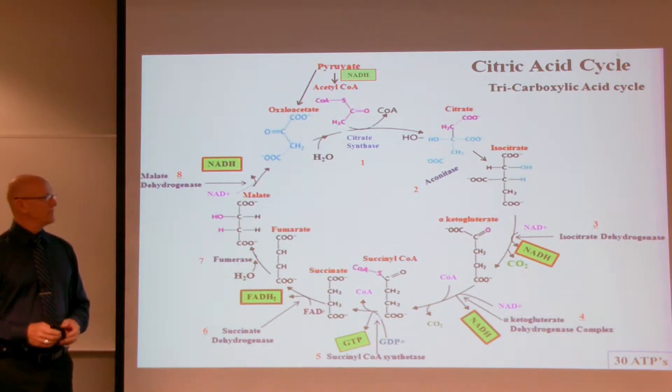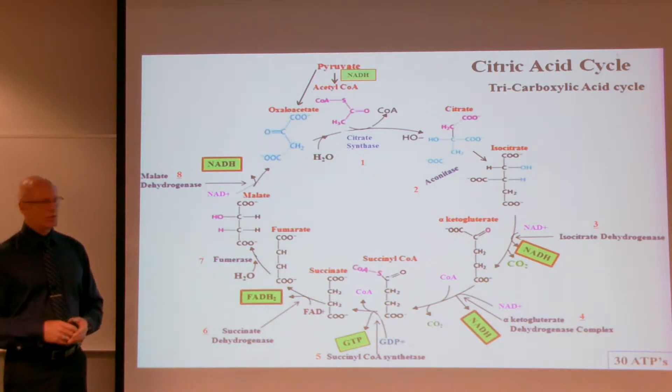There's another name, the Krebs cycle, named after Hans Krebs. He was a Jewish-German citizen who elucidated this mechanism, and he ended up fleeing Germany prior to World War II.